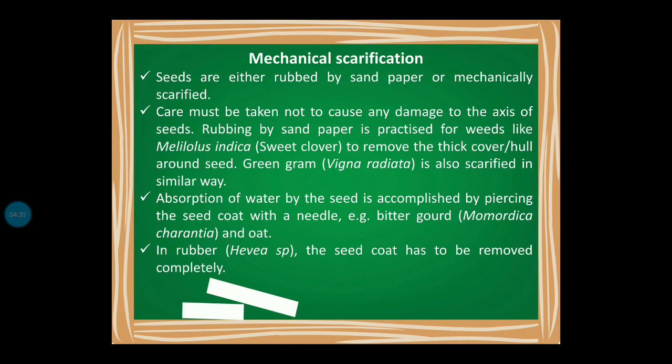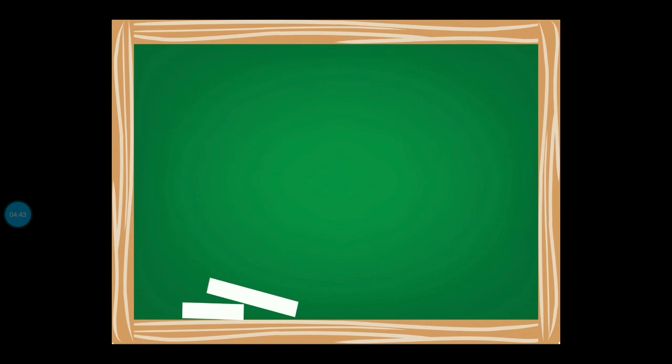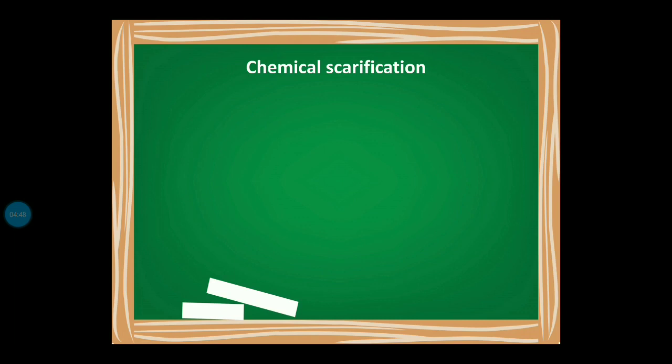For rubber and similar species, the seed coat has to be removed completely. That covers mechanical scarification. Now let us talk about chemical scarification.